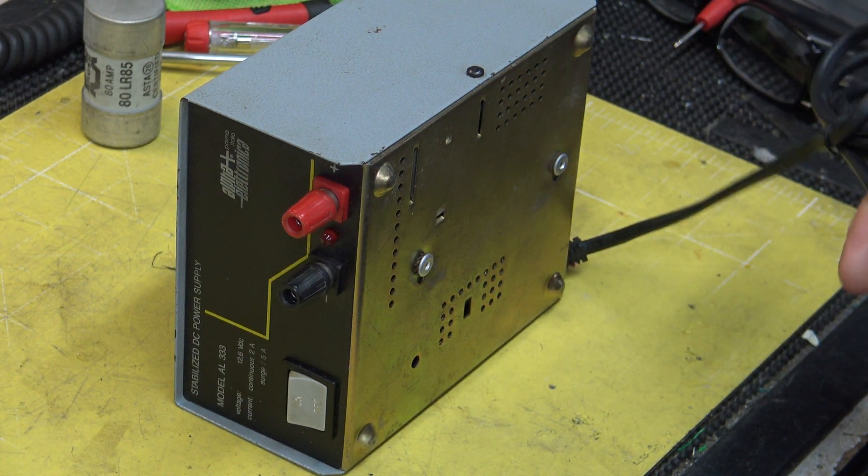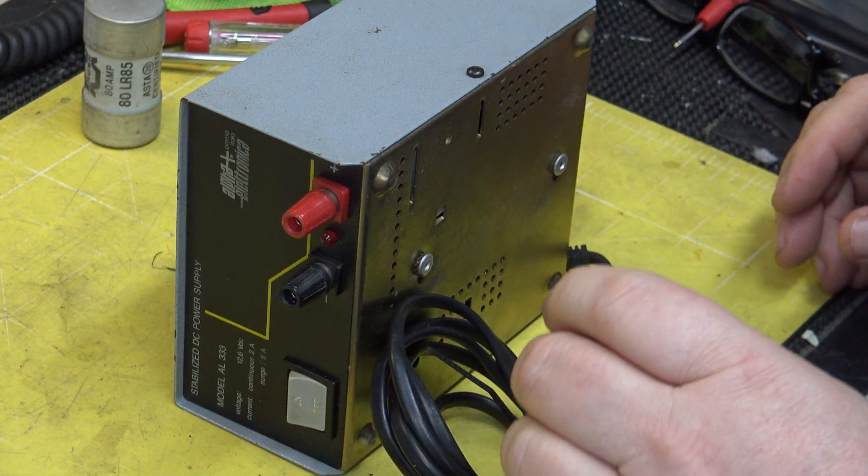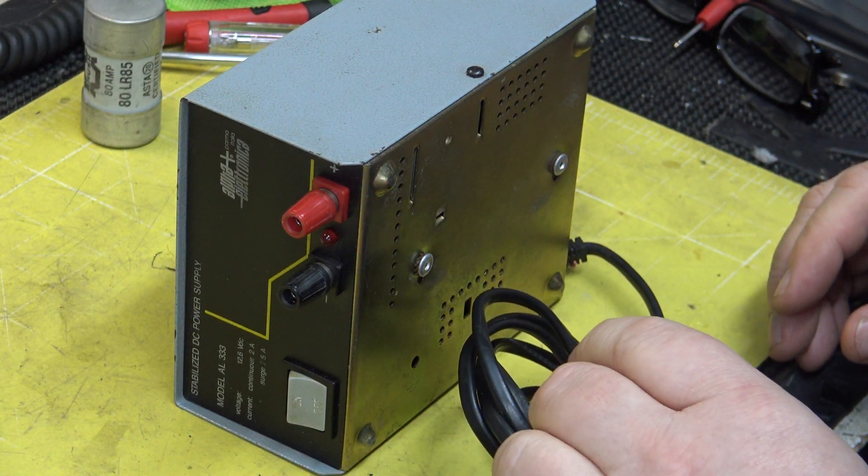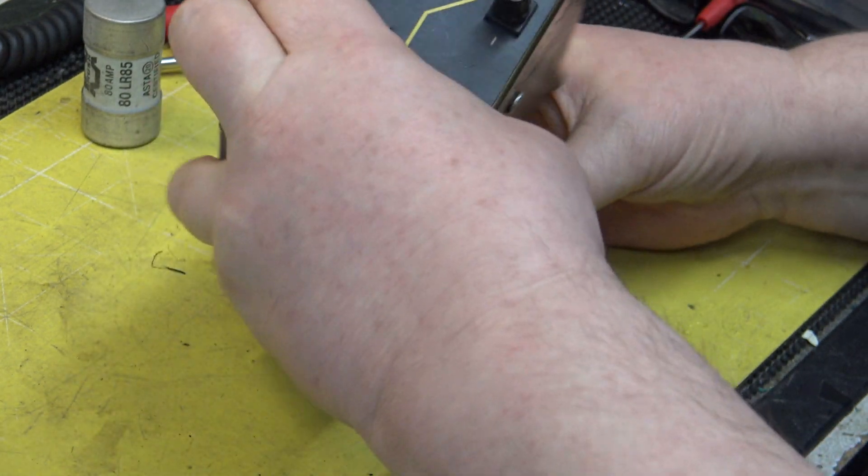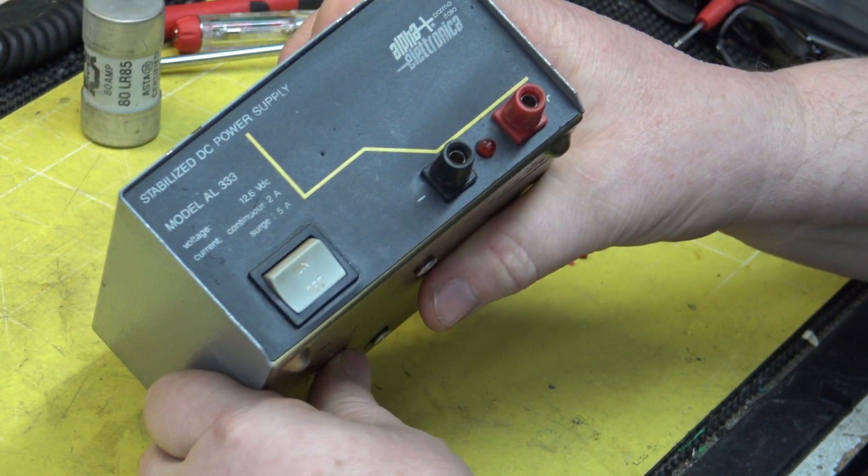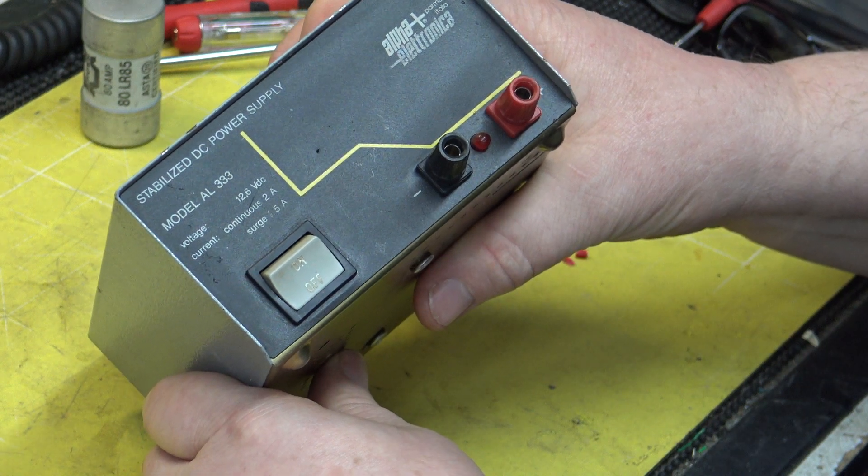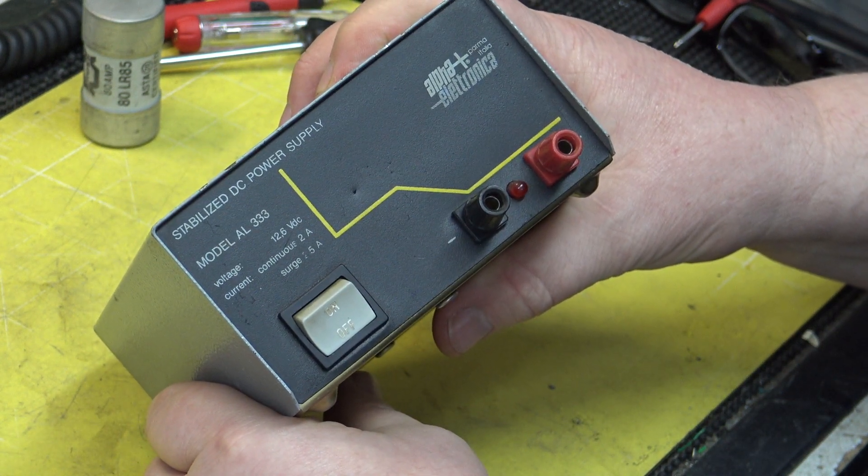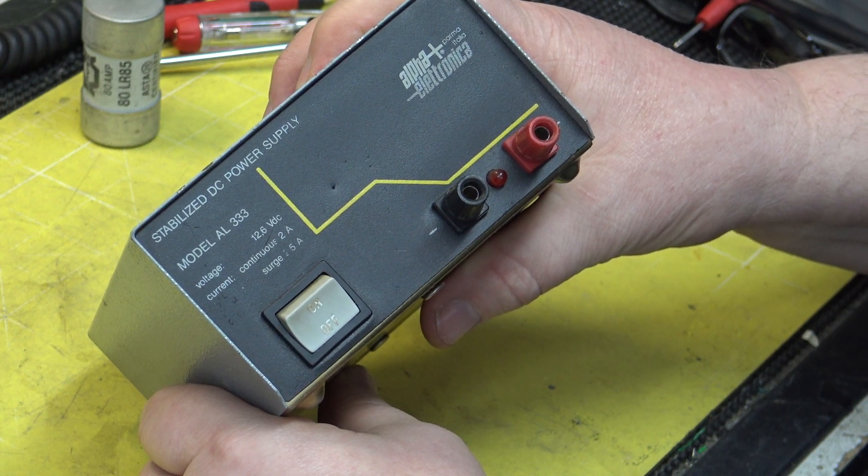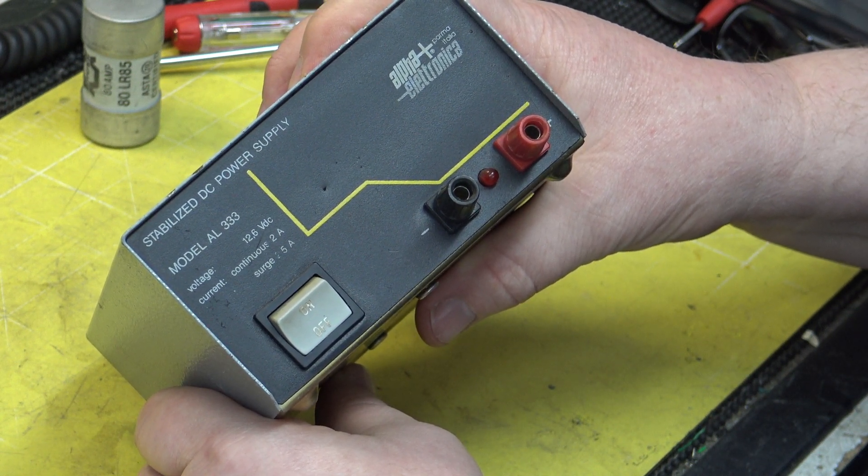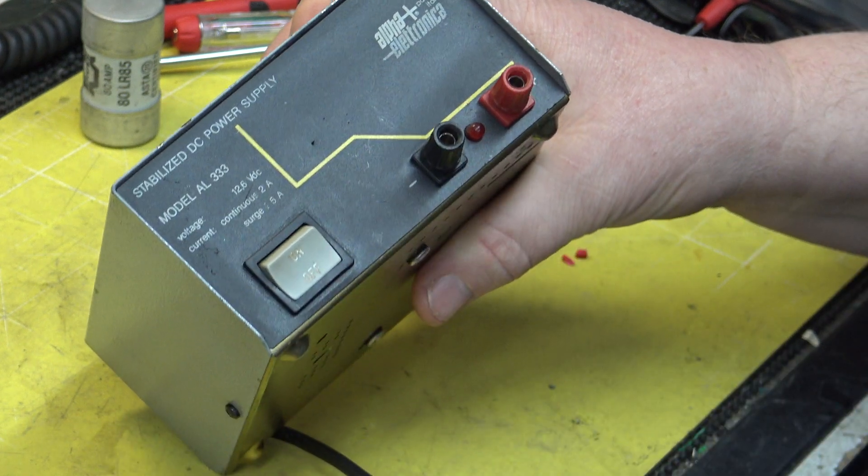Today we've got a power supply video. I bought this off eBay because you don't often see them—it's a 12.6 volt power supply. Some of the CB sets we've covered, like some of the handhelds, are 12 volt radios. Some of those emergency sets are 12 volt radios. If you put them on 13.8 volts, you'll destroy the radio.